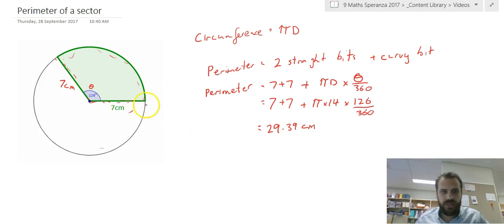Now sometimes you might just be asked for the curvy bit, or sometimes the drawing won't look like this. The drawing will look more like this. That's still a sector of a circle. As long as you've got this angle, let's say 42 degrees, and as long as you've got a length, let's say 8 centimeters, you can still use your formula. Radius, but we need the diameter, so we'd use 16 here.